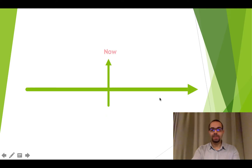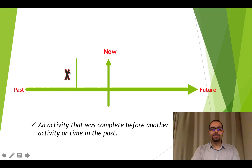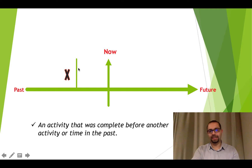As you can see on this timeline, this is past perfect. We use past perfect for an activity that was completed before another activity or time in the past. This activity finished and was completed before this time or another activity.